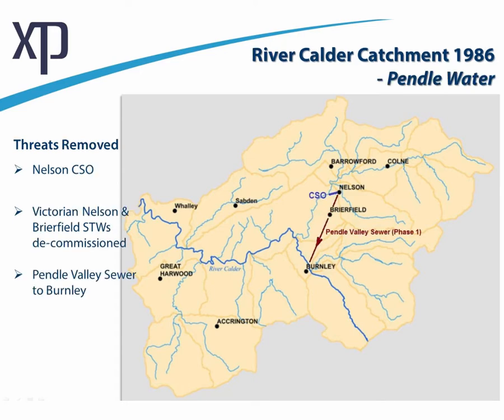Moving forward to what was completed by 1986: we built Phase One of the Pendle Valley Sewage Scheme. The Burnley Sewage Treatment Works was expanded, and a trunk sewer was built from Nelson down through to the works over many miles. We decommissioned and removed from service the sewage treatment plants at Nelson and Brierfield. However, we did build a combined sewer overflow at the location of the old Nelson Sewage Treatment Works, and then redeveloped the site as an industrial estate.